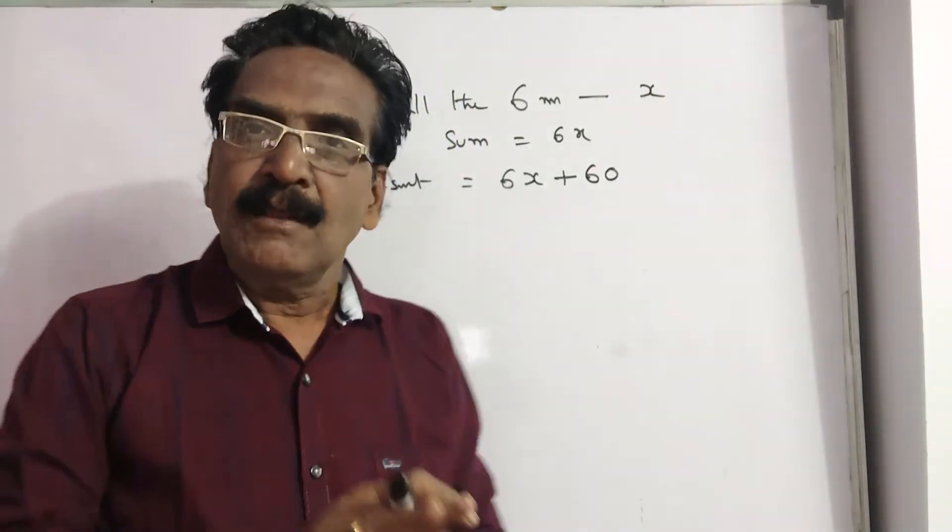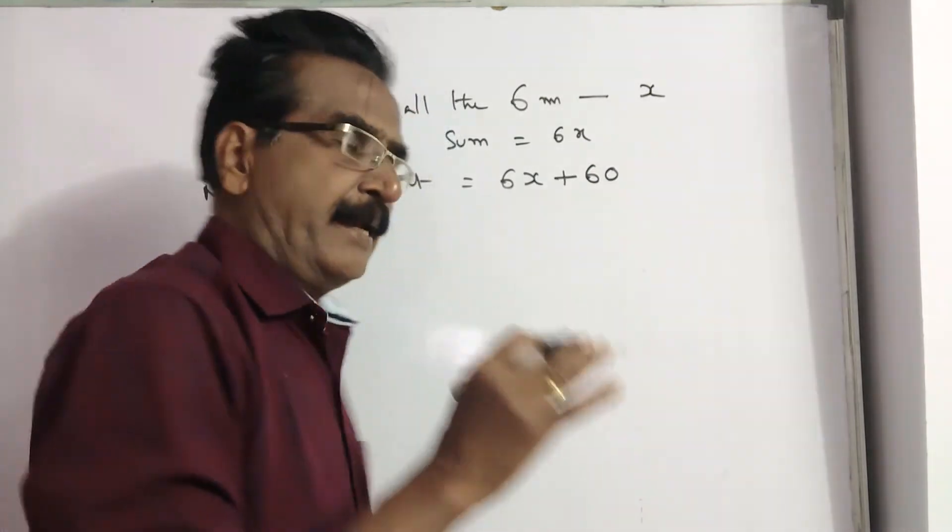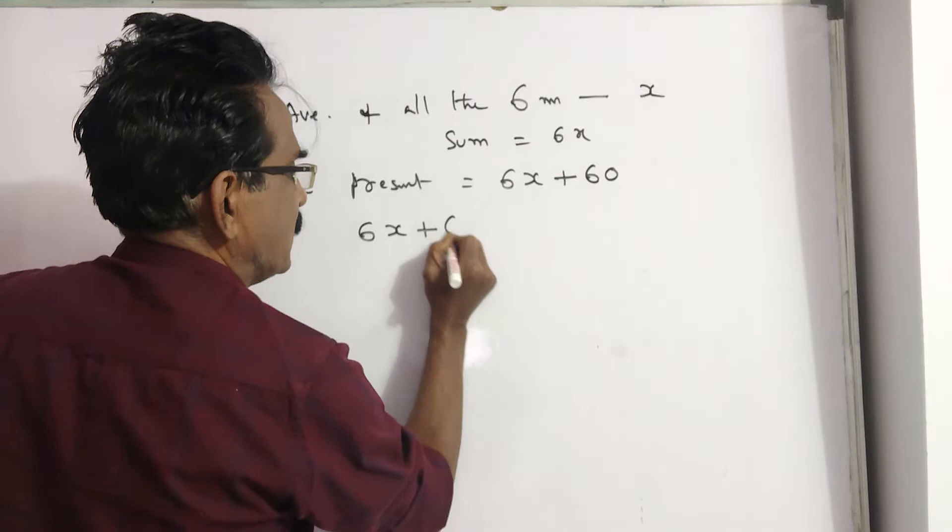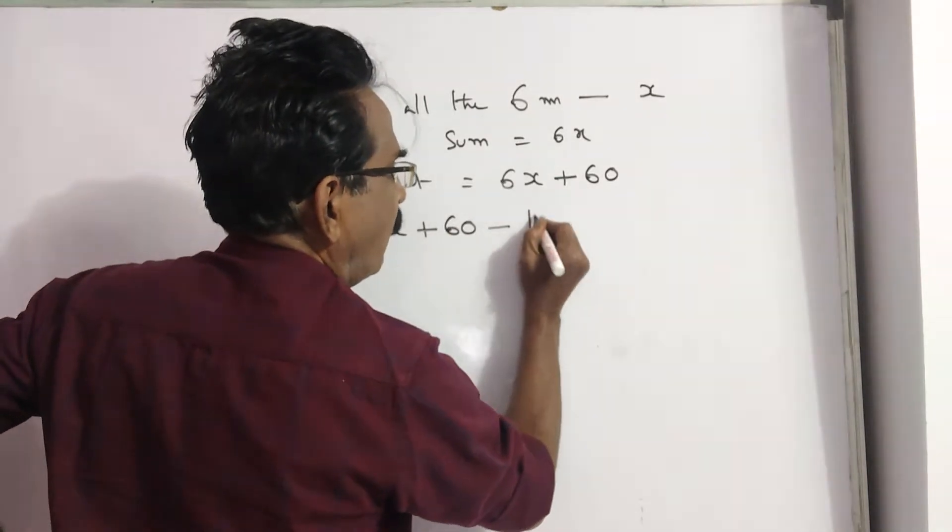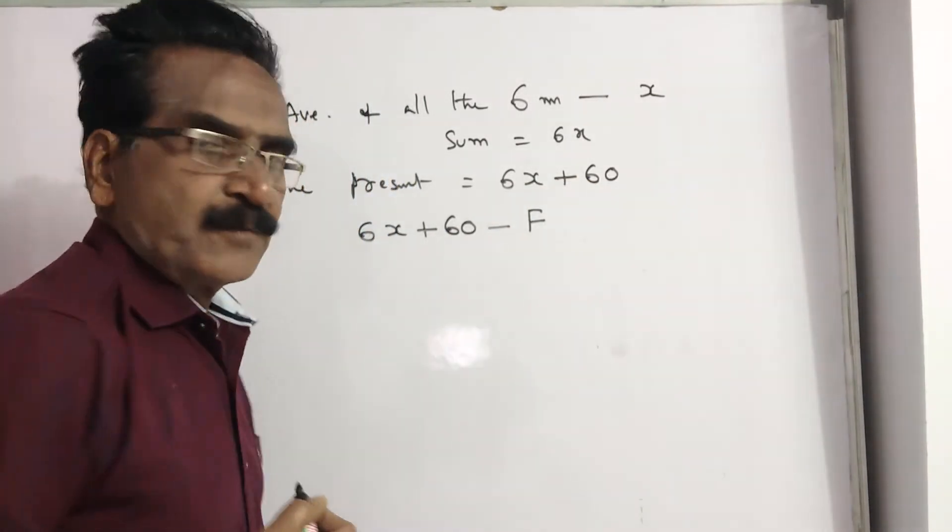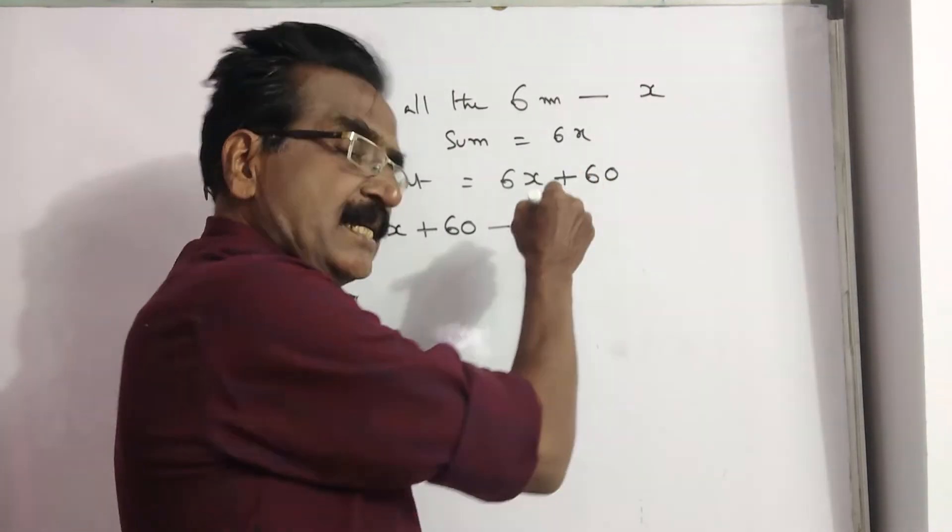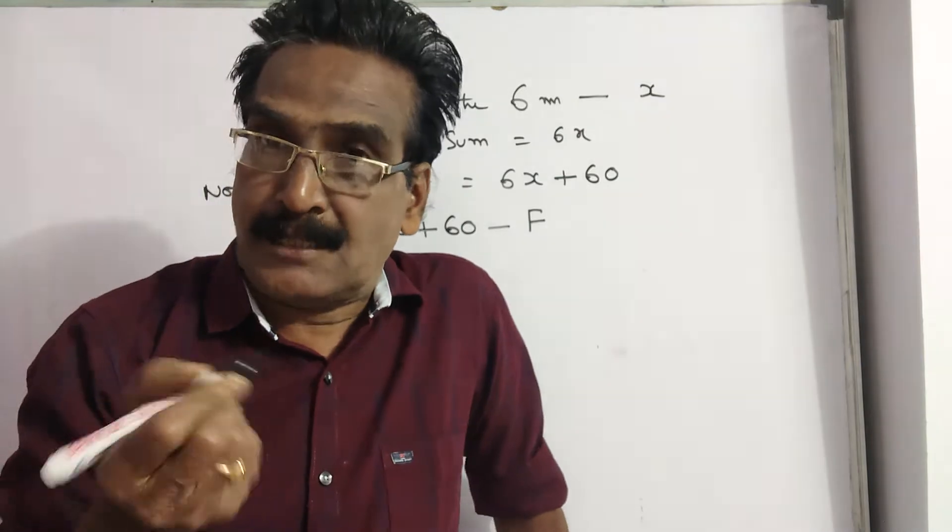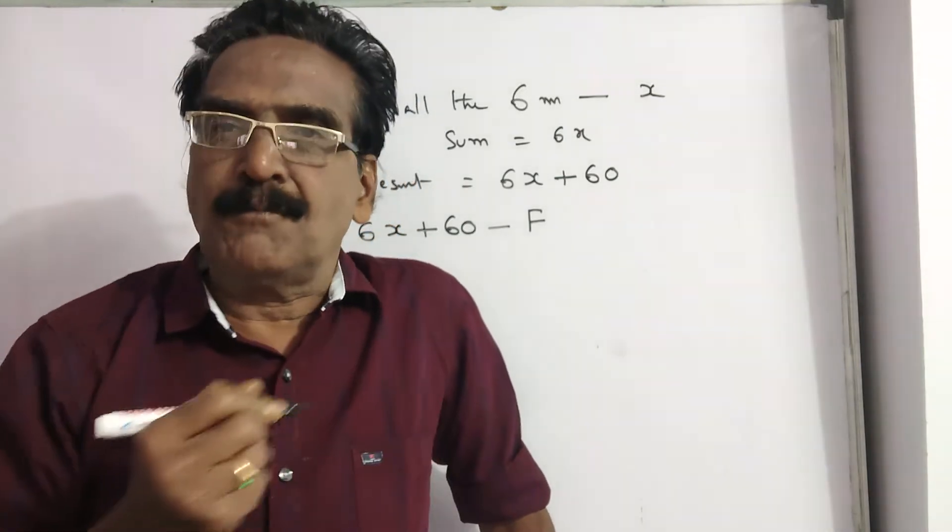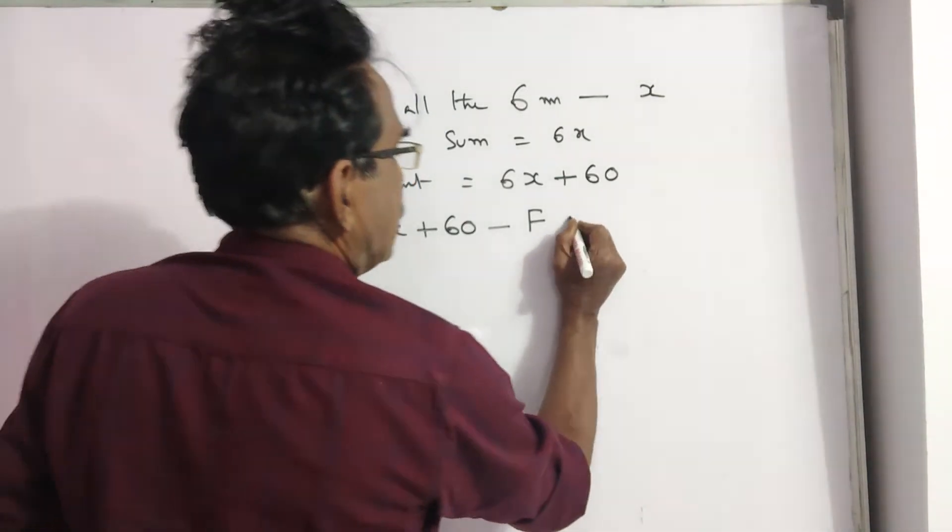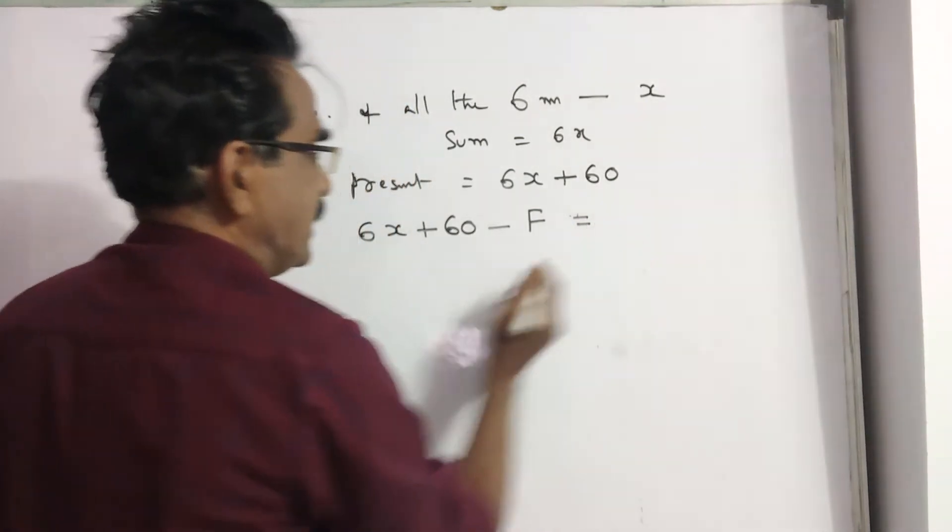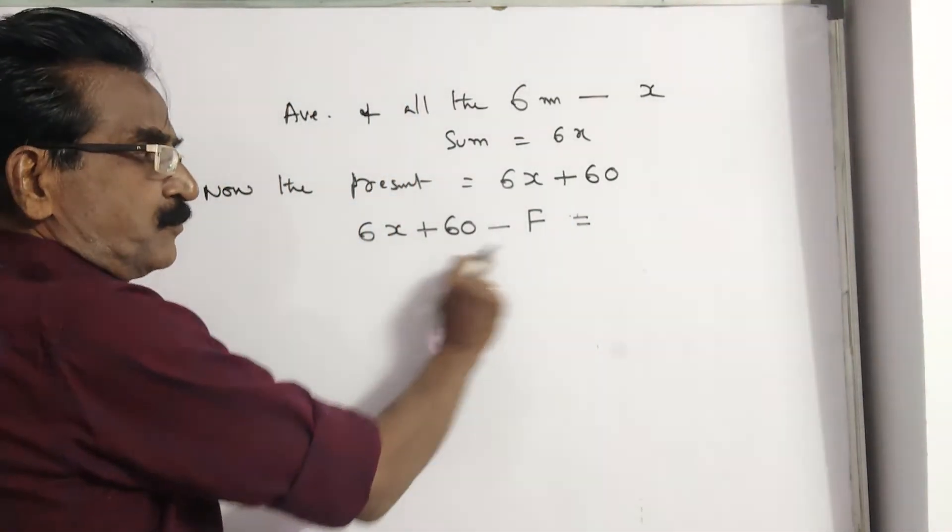Now what happened? Father died and baby born. So, 6X plus 60, this is sum minus father died plus baby is born. Of course, baby's age has to be taken as 0, just born baby. So I am not putting baby here. This is their sum.